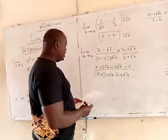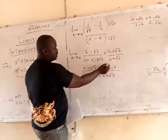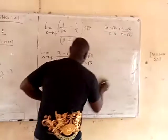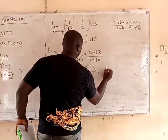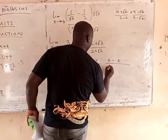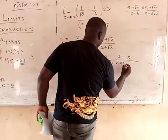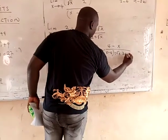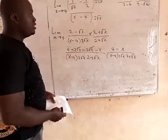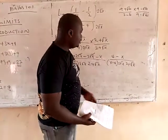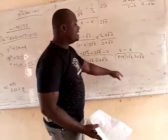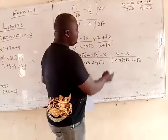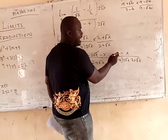Then the next thing: you can see that this will cancel out this. So I'm going to be left with 4 minus x, all over x minus 4, into 2 root of x, into 2 plus root x. Now look at this. The purpose of simplifying this is to find a value I can cancel from the denominator. I have x minus 4 here, and I have 4 minus x.